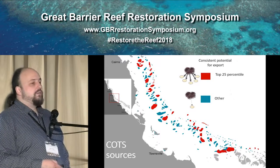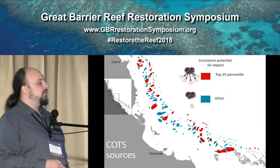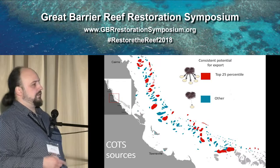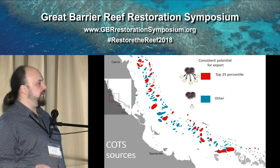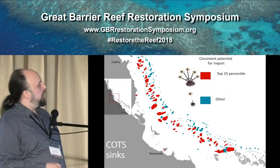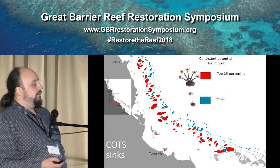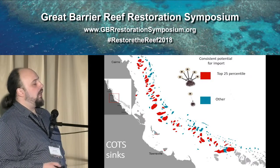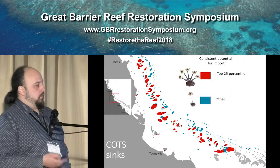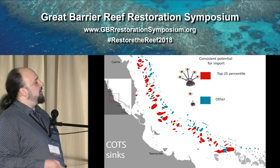We can do the same thing for COTS sources — these are the reefs that are going to be bad news if they have outbreaks. They won't necessarily have outbreaks, but if they do, they can spread the larvae and make the situation worse. And we can also identify the reefs that are going to have a higher chance of experiencing COTS outbreaks given that COTS are in the region — these are the reefs you might want to check to see if they actually do have COTS, because you're more likely to find COTS there.